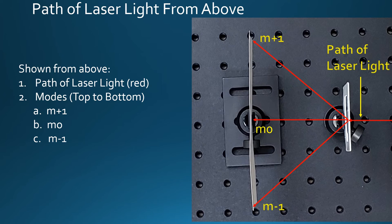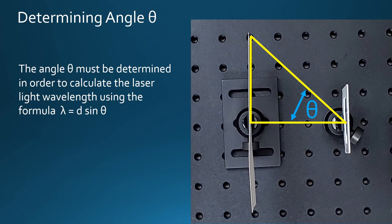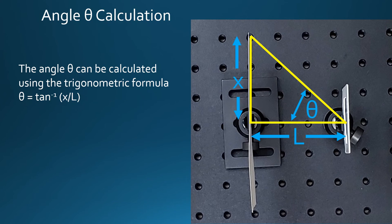When viewed from above, notice how two right triangles are formed by the laser light paths and the plane of the target. The triangles should be equal if the laser light is perpendicular to the target. Using either one of the triangles, the angle theta must be calculated.